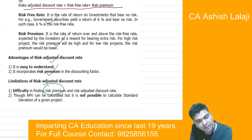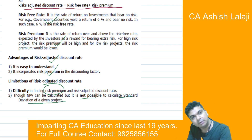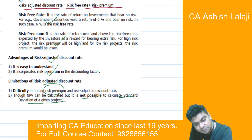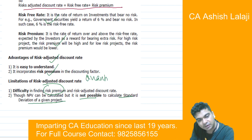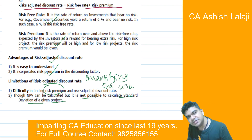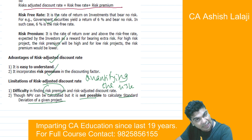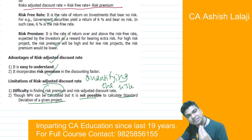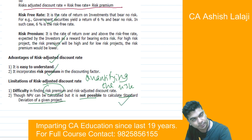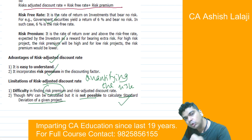Similarly, though the NPV is calculated, it is not possible to calculate the standard deviation of the given project. Standard deviation will be our next discussion — it is basically quantifying the risk. So far, we are saying higher risk, lower risk, medium risk, but how much exactly is the risk — is it 10%, 12%? Quantification of risk will happen by the standard deviation, which is a concept we still have to cover.